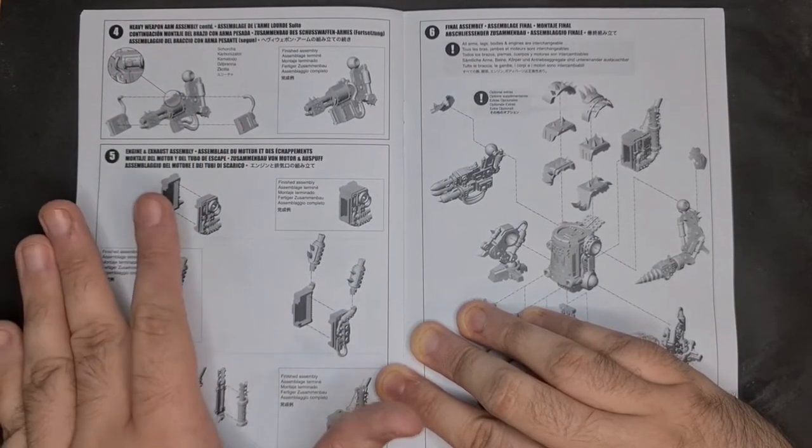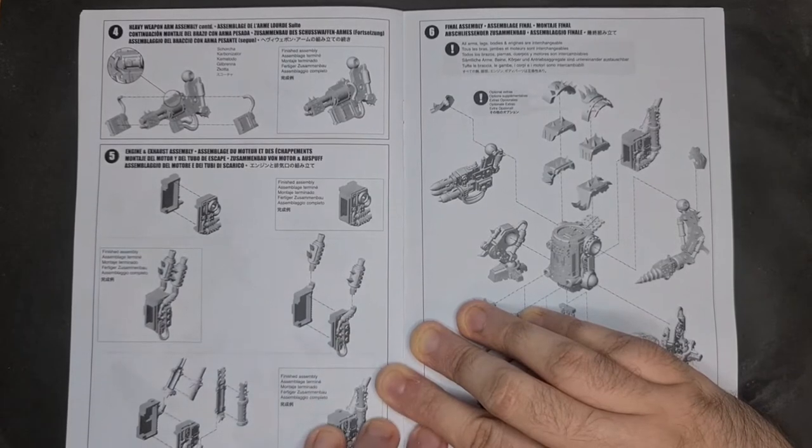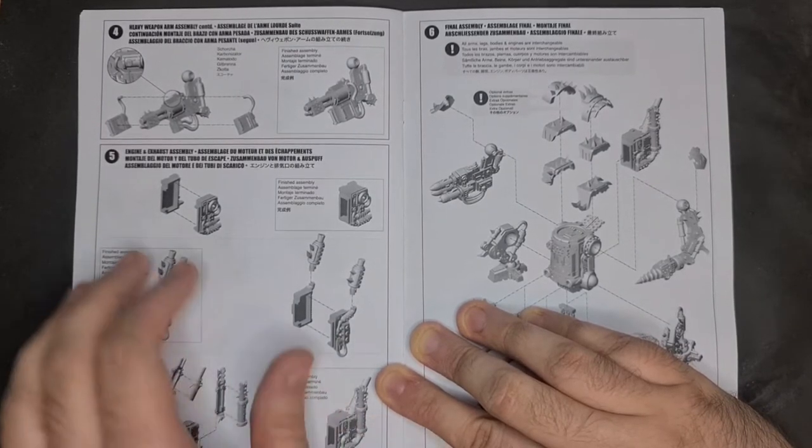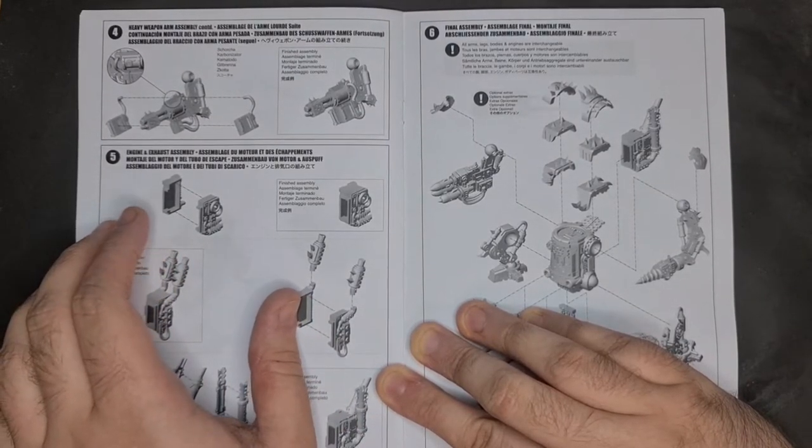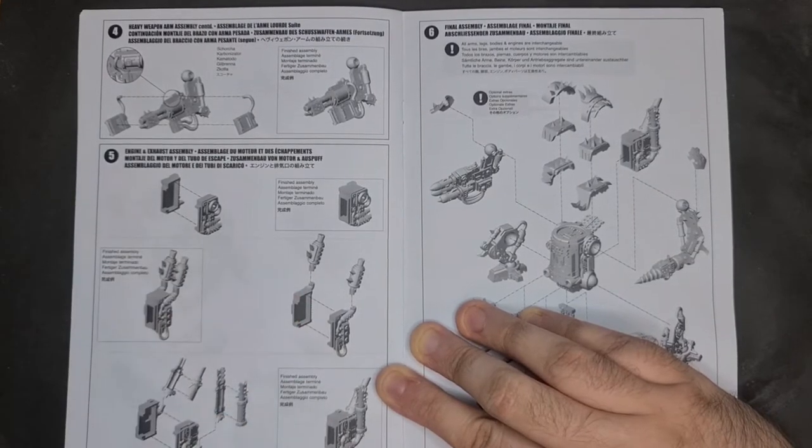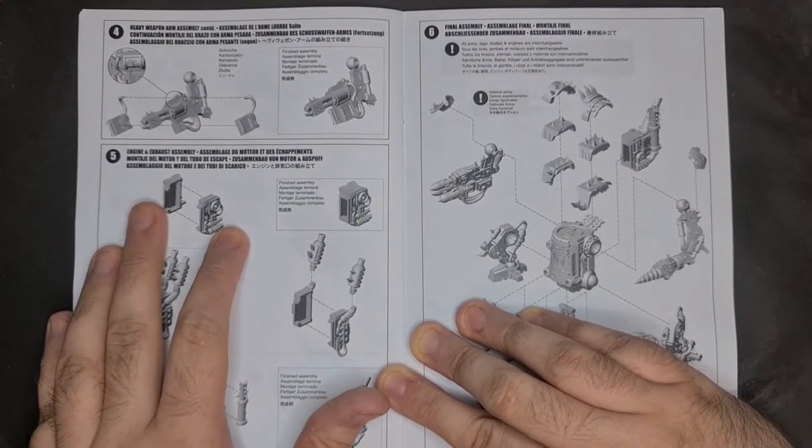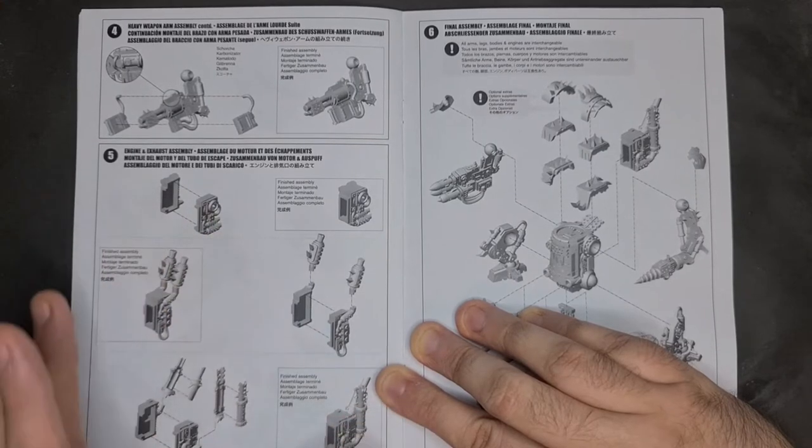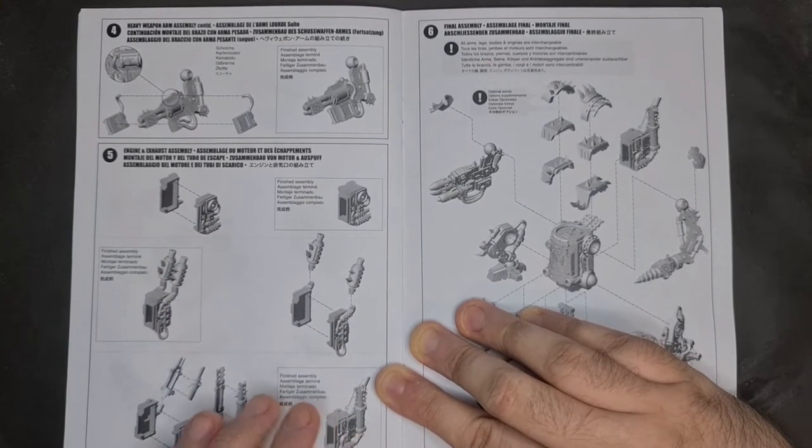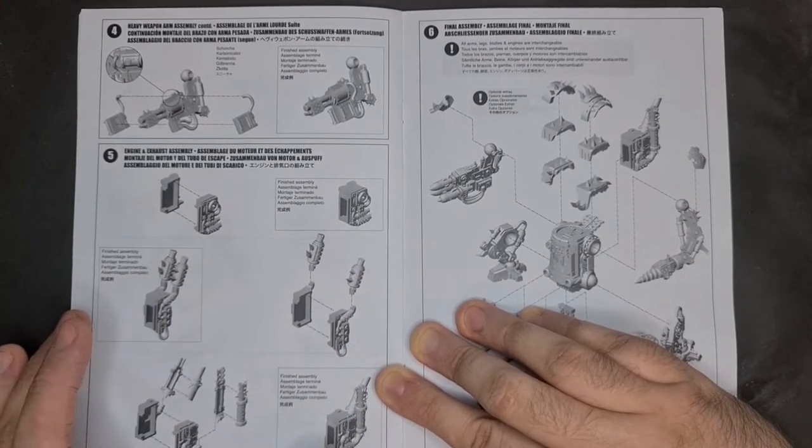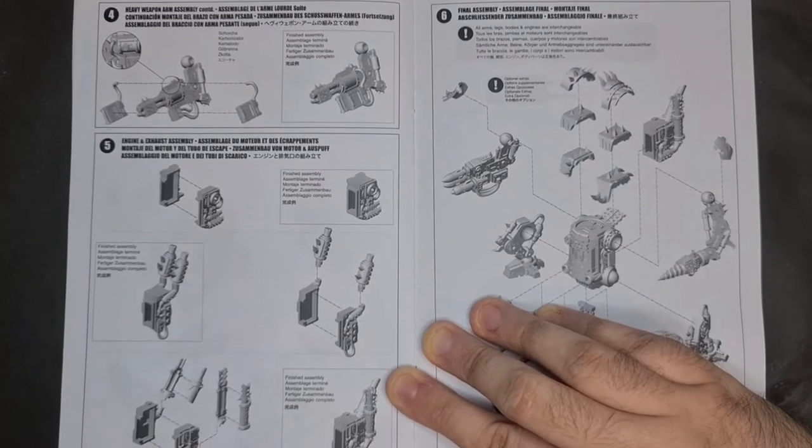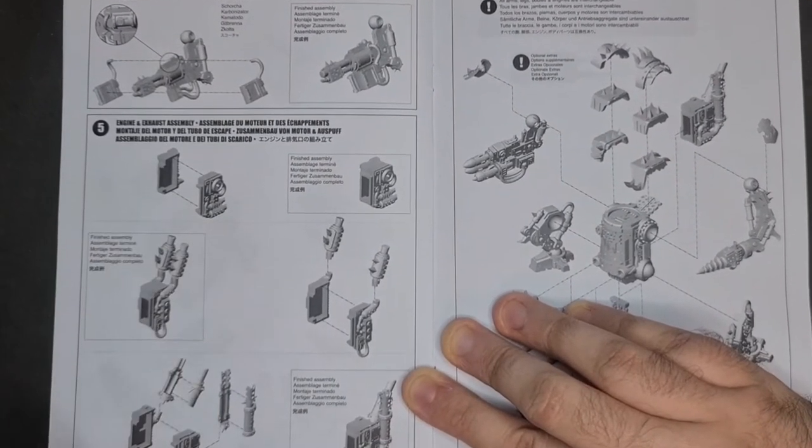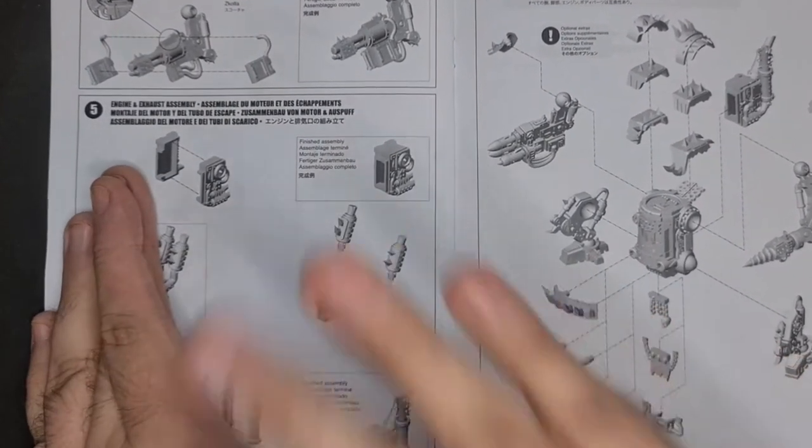Step five: engine and exhaust assembly. It's obviously quite simple. You get these two pieces to go together to create this box type design, and then you get your exhaust that attach on. Quite simple. You get some variety again, which is nice. Just look at your guide and follow it. More advanced people could customize this quite nicely.